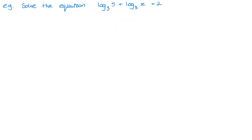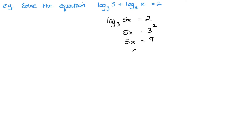Final example: solve the equation. The first thing we want to do is write these as a single logarithm. They have the same base, so it's the multiplication rule, giving us log of 5x. Using the rule from the previous video, this becomes 5x equals 3 squared, which is 9. So x equals 9 over 5, or as a decimal, 1.8. I personally prefer to leave things as a fraction.